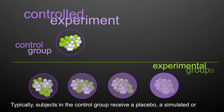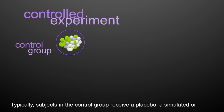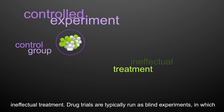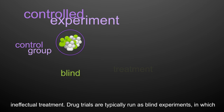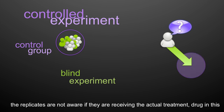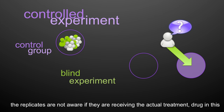Typically, subjects within the control group receive a placebo — a simulated or ineffectual treatment. Drug trials are typically run as blind experiments, in which the replicates are not aware if they're receiving the actual treatment, or drug, or the placebo.